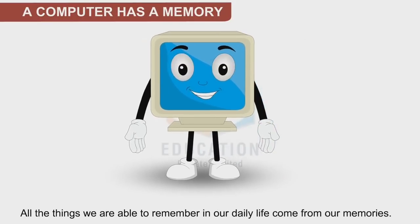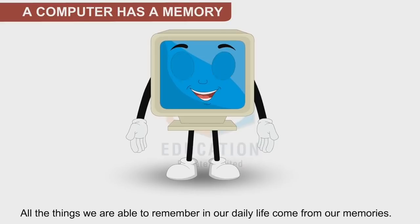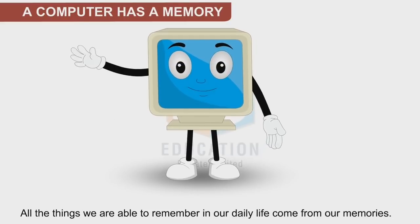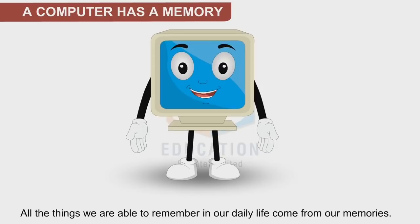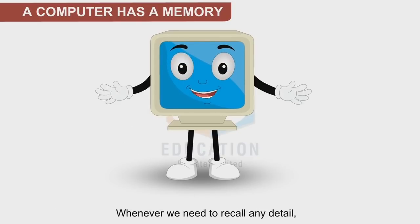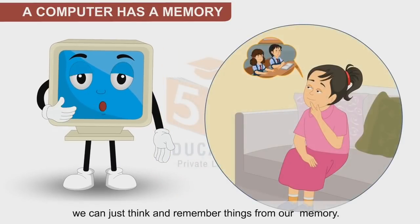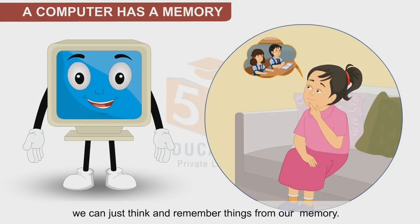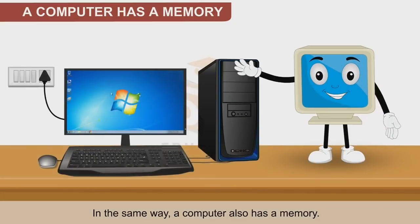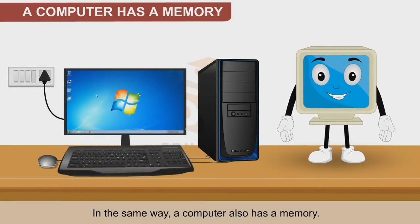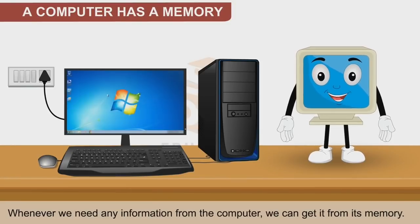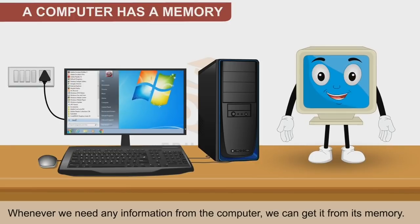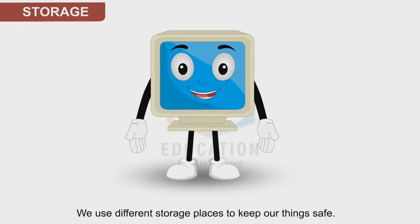All the things we are able to remember in our daily life come from our memories. Whenever we need to recall any detail, we just think and remember things from our memory. Similarly, a computer also has a memory which is kept inside the CPU box. Whenever we need any information from the computer, we can get it from its memory.